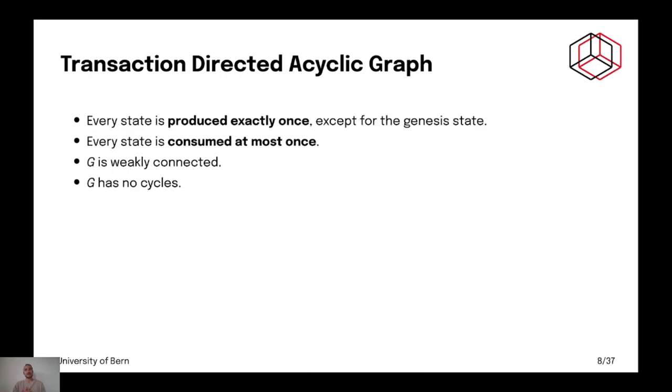Now, you also have a set of rules. Every state is produced exactly once. So, it's mostly a consequence of the hash function. Also, every state is consumed at most once. If that's not the case, well, you have the balls pending, right? Now, you also have that G is weakly connected. And that G has no cycles.